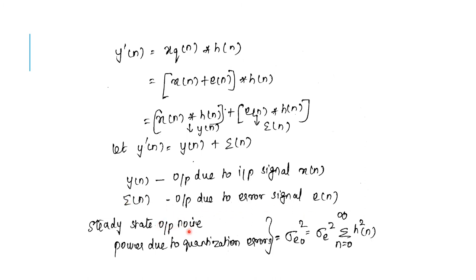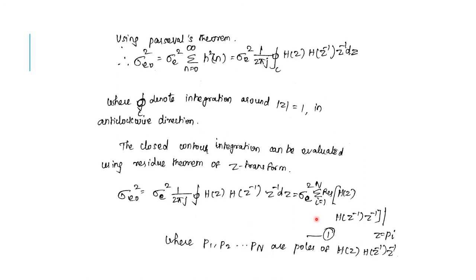The steady state output noise power due to quantization errors is given by sigma E0 squared equals sigma E squared times the summation from n equals 0 to infinity of H squared of n. Using Parseval's theorem, this becomes sigma E squared times 1 over 2πj times the closed contour integral of H(z) H(z⁻¹) z⁻¹ dz, integrated around the unit circle in the anticlockwise direction.